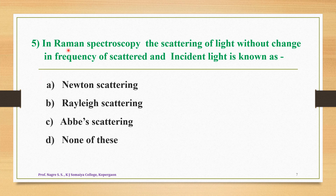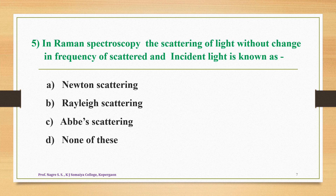Question 5: In Raman spectroscopy, the scattering of light without change in frequency of scattered and incident light is known as — option A: Newton scattering, option B: Rayleigh scattering, option C: Raman scattering, option D: none of these. When there is no change in frequency between incident and scattered light, the correct answer is option B — it is called as Rayleigh scattering.